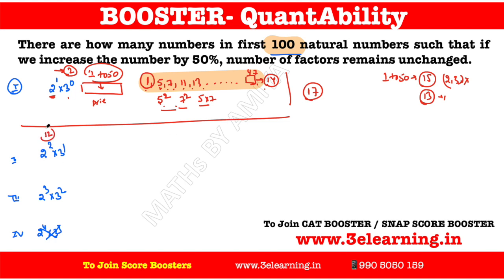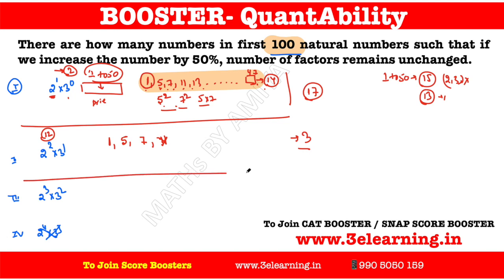Now this value is 12. We multiply 12 by what we can. We can multiply by 1, giving 12. We cannot use 2 or 3, but we can do 5: 12×5 = 60. We can do 7: 12×7 = 84. Can we go to 11? 12×11 = 132, which exceeds 100, so we will not include 11. So we have only 3 cases here: 12, 60, and 84.